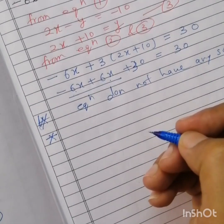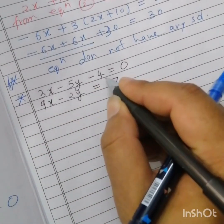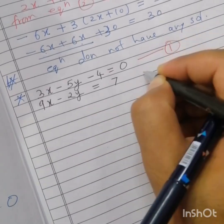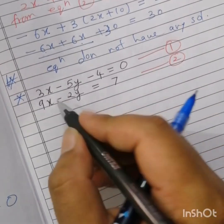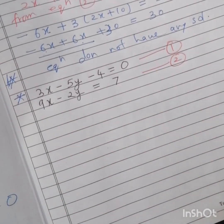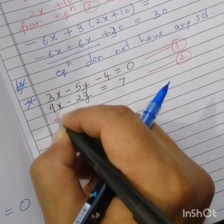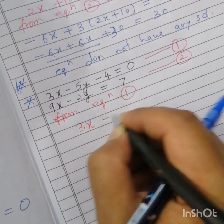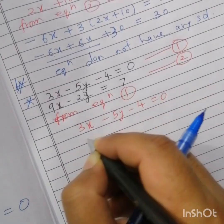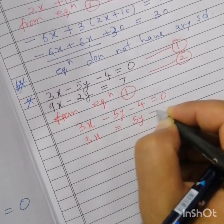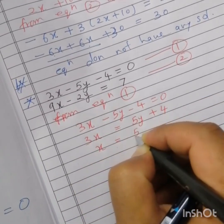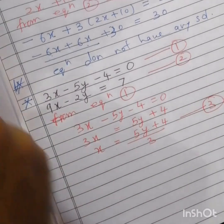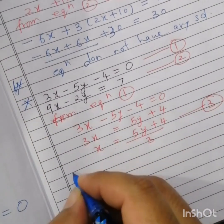Now suppose we take another example: 3x minus 5y minus 4 equals 0 (equation one) and 9x minus 2y equals 7 (equation two). You can use any one equation to start. From equation one: 3x equals 5y plus 4, so x equals (5y plus 4) divided by 3 — call this equation three.